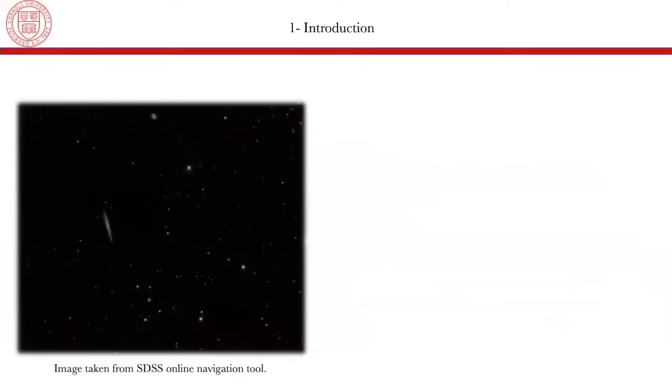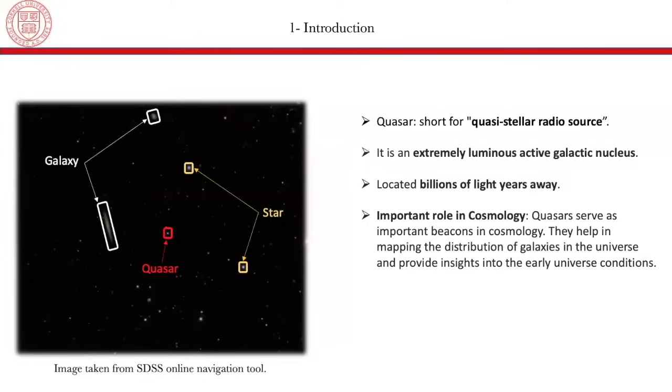I have taken this picture using the SDSS online navigation tool, and there are different objects that can be seen in this picture. So we can see some galaxies, some stars, and even one quasar. A quasar is the short form for a quasi-stellar radio source. It is an extremely luminous active galactic nucleus, and it is located billions of light years away. It is a very important object in space because it serves as a beacon in cosmology. It helps us in mapping the distribution of galaxies in the universe, and it provides insights into the early universe conditions.